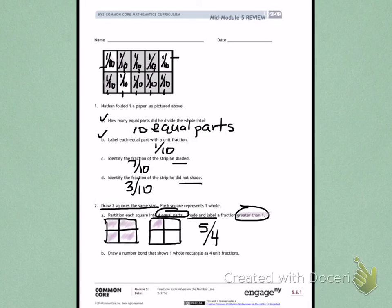Letter B. Draw a number bond that shows one whole rectangle as four unit fractions. So one whole rectangle would give me the unit fractions of 1 fourth, 1 fourth, 1 fourth, and 1 fourth.